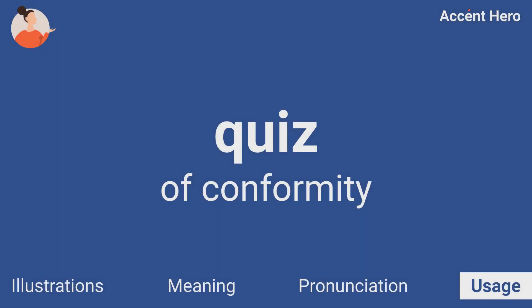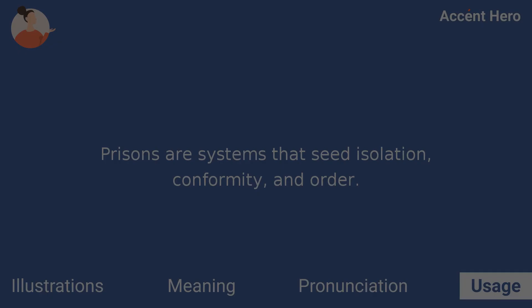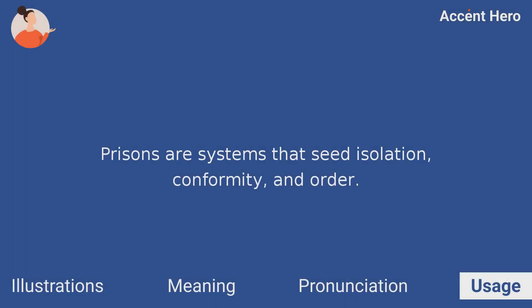Quiz: How would you say that prisons are systems that cede isolation, rules following, and order? Answer: Prisons are systems that cede isolation, conformity, and order.